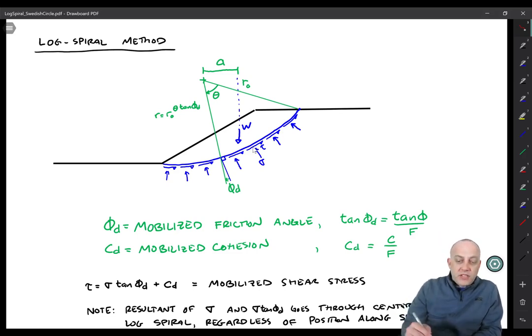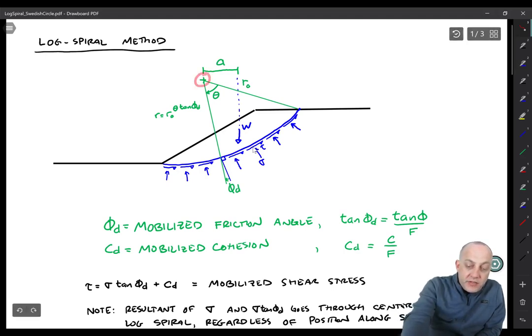So let's dig into that. We'll do the log spiral method first. So a log spiral is one where basically you have a center of the spiral here and maybe there's some radius that's associated with some position in space like the head of the slope.